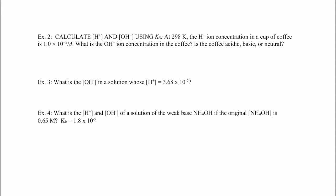Hey kiddos, welcome back. In our last video, I hope you recall, we wrote the equilibrium expression for water. We said it was the hydrogen ion concentration times the hydroxide concentration, and that equals 1.0 times 10 to the negative 14. Now this number is a constant, which means it's not going to change. So if we know either the hydrogen ion concentration or the hydroxide ion concentration, we should be able to calculate the one that's missing.